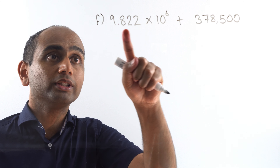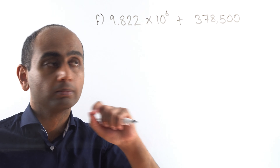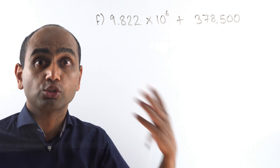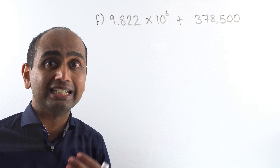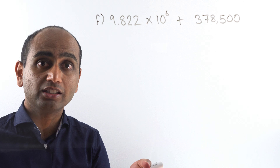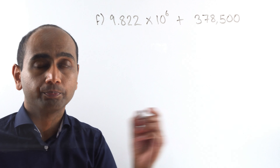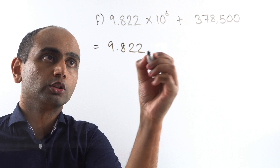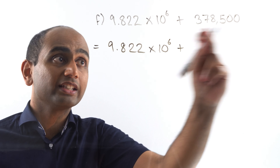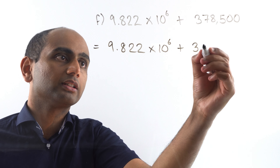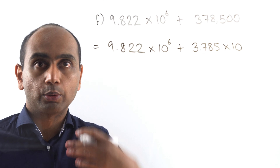Here's question F: 9.822 times 10 to the power of 6 plus 378,500. This time I've got a number that isn't in standard form — it's just written as an ordinary number. What I want to do is turn this into something like the previous questions by rewriting 378,500 in standard form. So I've got 9.822 times 10 to the power of 6, and 378,500 is 3.785 times 10 to the power of 5.